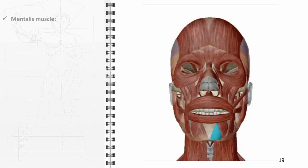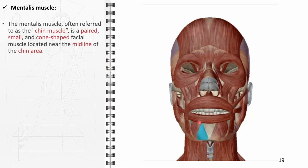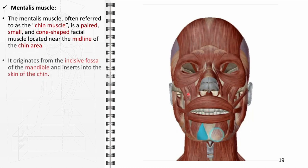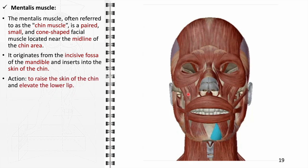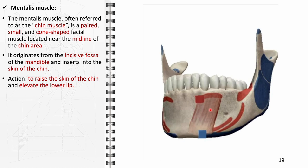The mentalis muscle, often referred to as the chin muscle and a component of the buccolabial group, is a paired, small, cone-shaped facial muscle located near the midline of the chin area. It originates from the incisive fossa of the mandible and inserts into the skin of the chin. Its primary functions are to raise the skin of the chin and elevate the lower lip. It receives blood supply from the inferior labial branch of the facial artery and is innervated by the mandibular branch of the facial nerve.